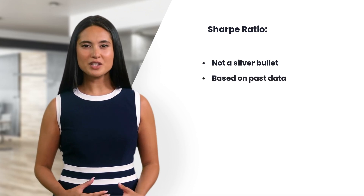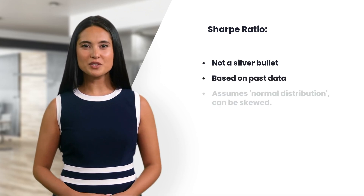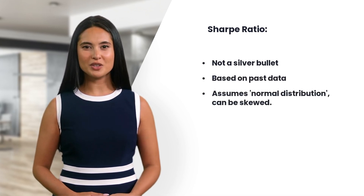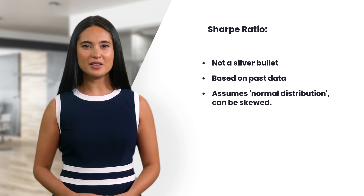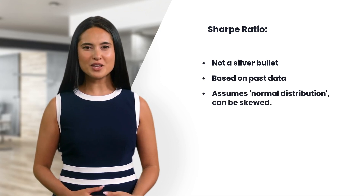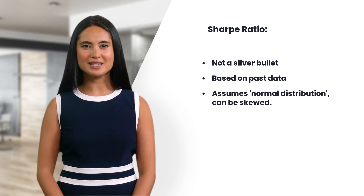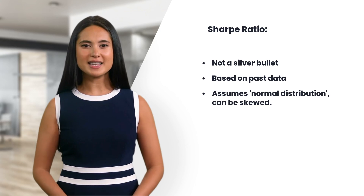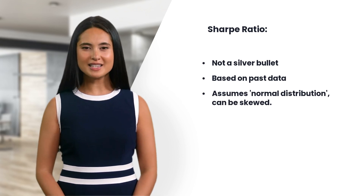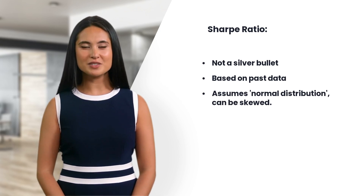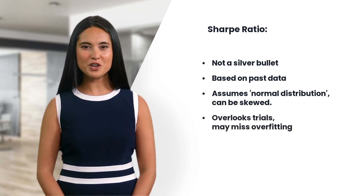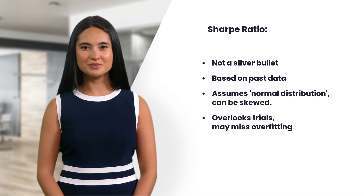As you may recall, the Sharpe Ratio is not a silver bullet solution and does have its limitations. It's based on past data and assumes returns follow a normal distribution — like heights of people in a city. But what if there's a basketball team in the city? Then the average height isn't very representative. Also, it does not account for the number of trials or tests performed to find the strategy.